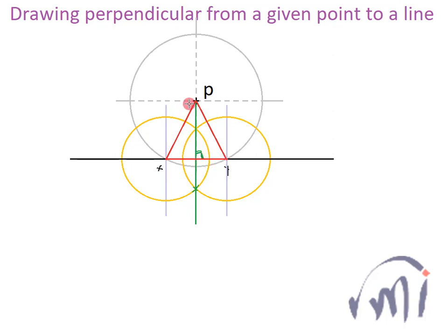So we are actually making an imaginary isosceles triangle PXY and we get point X, Y that is the base of the isosceles triangle. Then I draw the perpendicular bisector of the side XY.